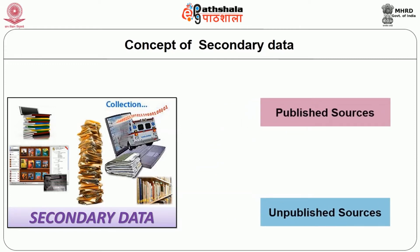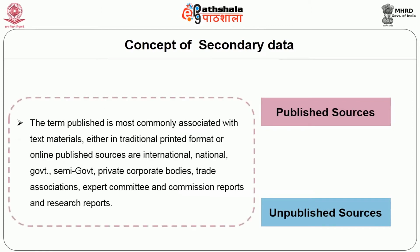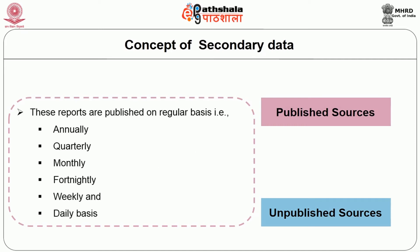The secondary sources can be classified into two categories: published sources and unpublished sources. Published sources — the term published is most commonly associated with text materials either in traditional printed format or online. Published sources include international, national, government, semi-government, private corporate bodies, trade associations, expert committee and commission reports, and research reports. These reports are published on a regular basis: quarterly, monthly, fortnightly, weekly and daily.